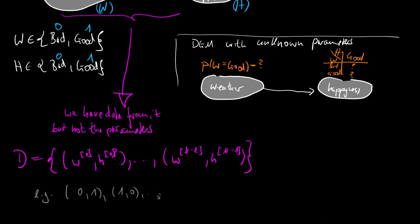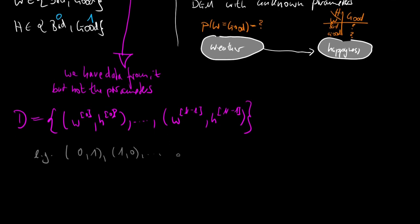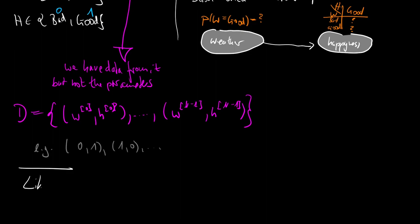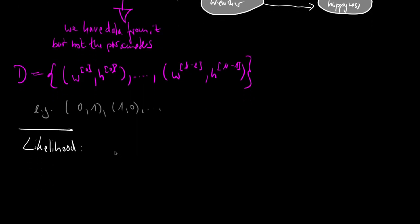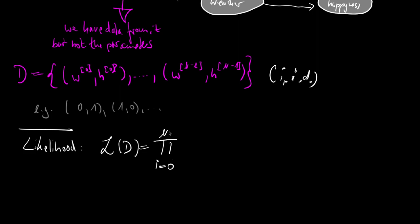How are we approaching this? The idea is that we use a maximum likelihood fit — we select those parameters for which the data has the highest probability. We know we have access to the directed graphical model, so we can define the likelihood. We use capital L applied to our dataset. By definition, since this is an IID dataset, and this goes from 0 to n-1, it's a product: multiplying the probability of the weather being at a particular value and the happiness being at the other particular value. We know that our DGM factorizes the joint.